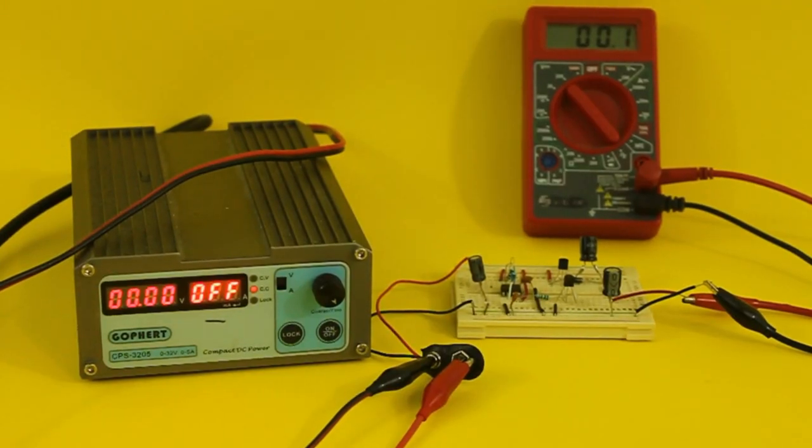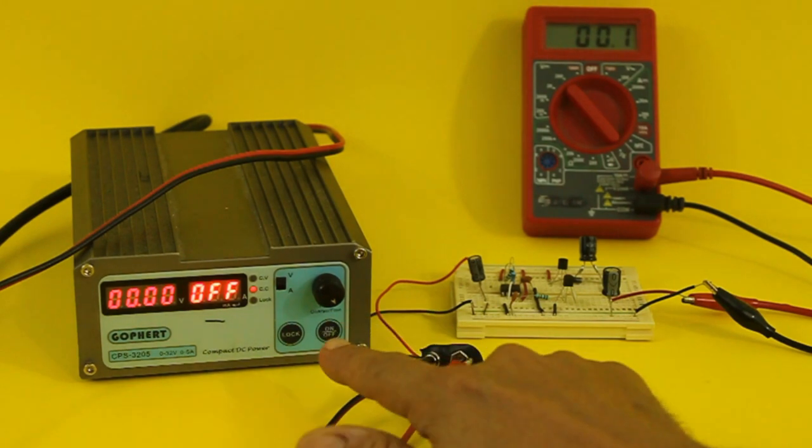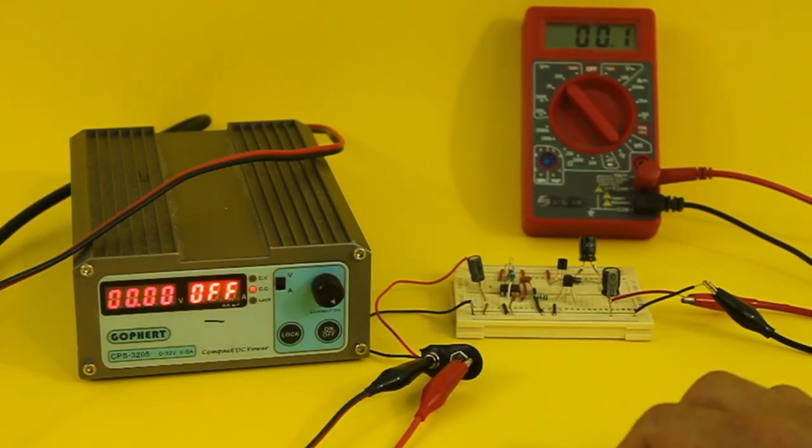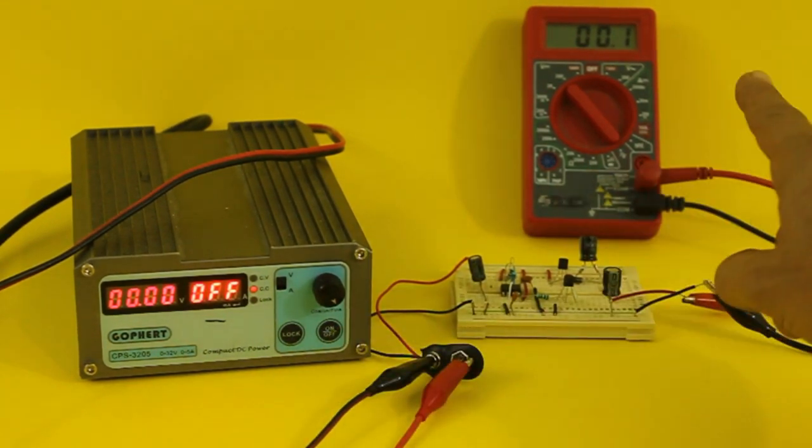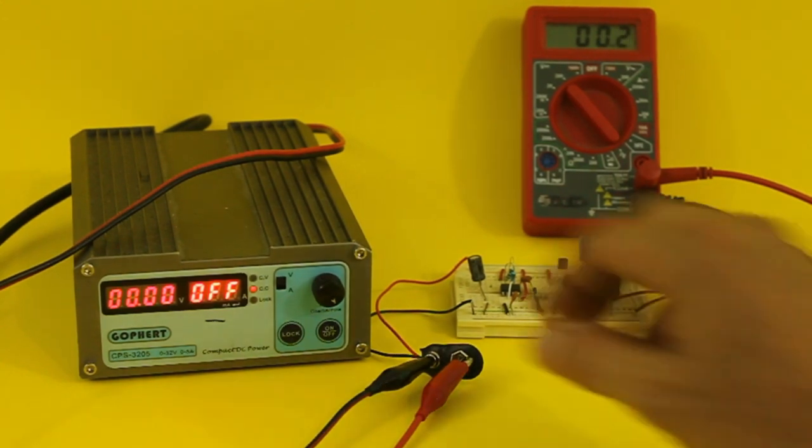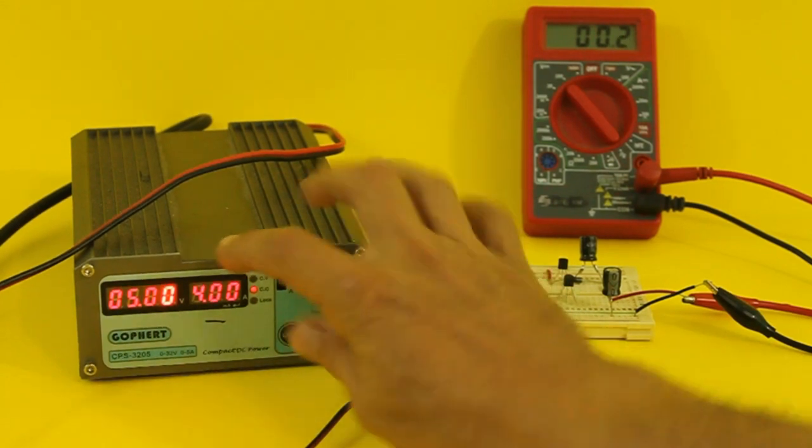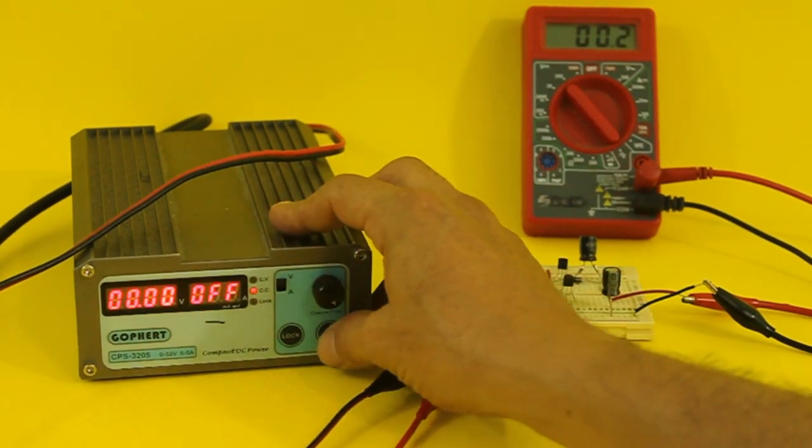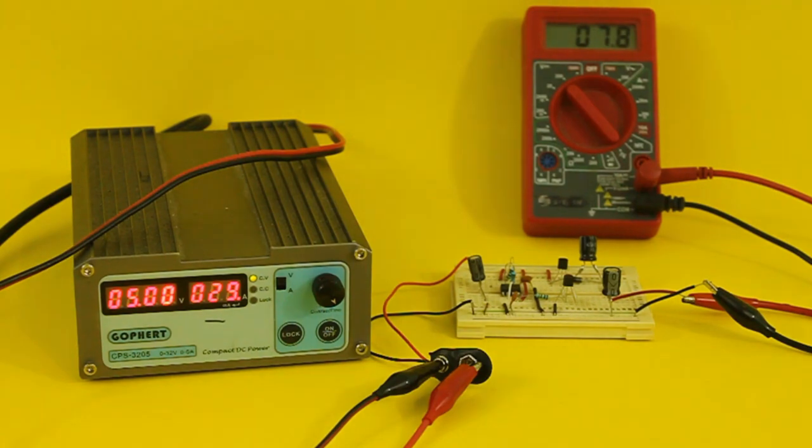Let's test the circuit. I am going to feed it with my variable power supply so that we can observe the input voltage and the output that is measured by the multimeter. I am going to set the power supply at 5 volts, turn it on and we can see that the output voltage is 8 volts.